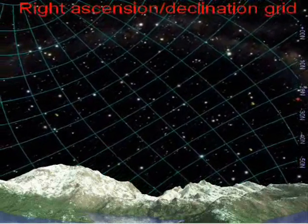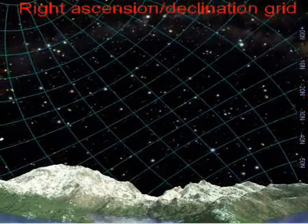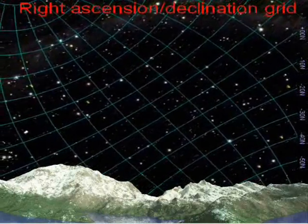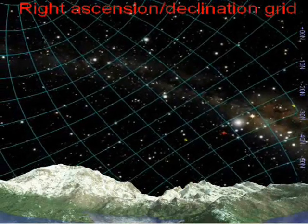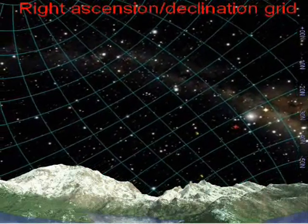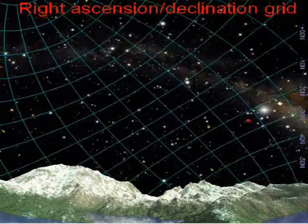Longitude lines on Earth divide one rotation into 360 degrees, but RA lines on the celestial sphere divide one rotation into 24 hours. Therefore one hour equals 15 degrees, 360 divided by 24.